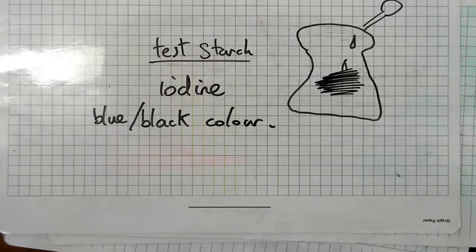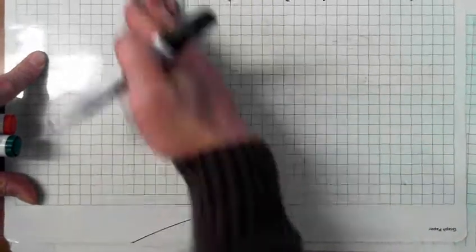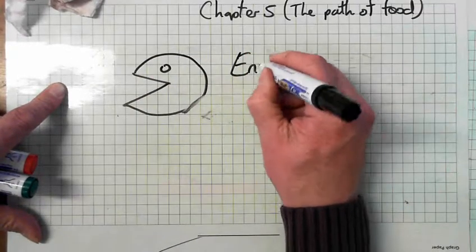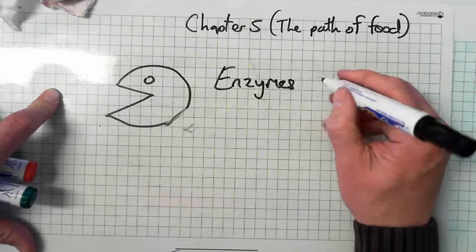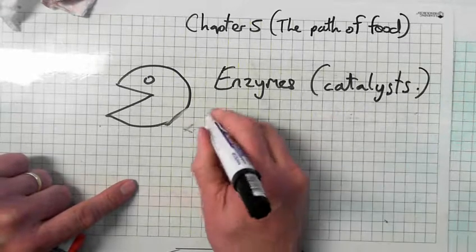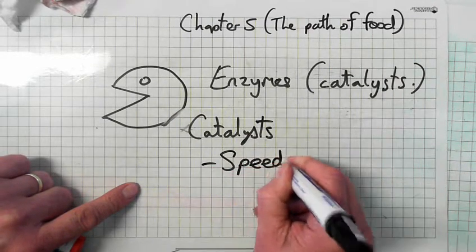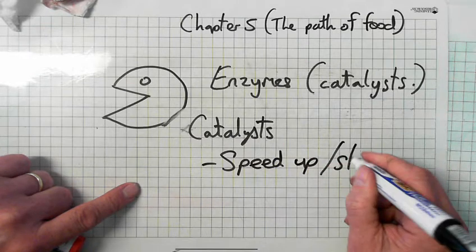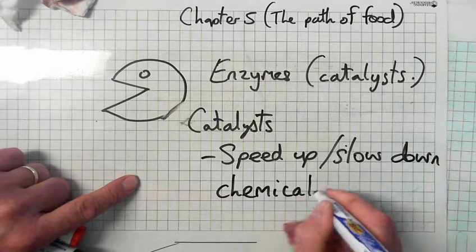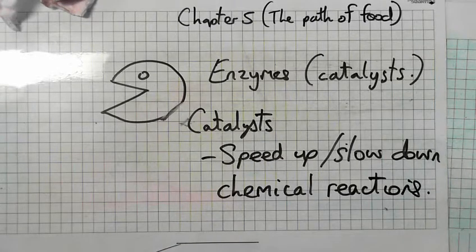Enzymes are catalysts. Catalysts speed up or slow down chemical reactions.